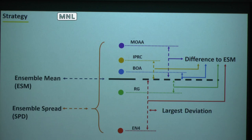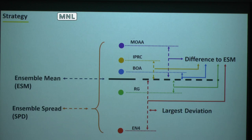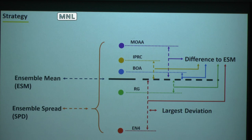For every variable we care about, at any time and anywhere, we can have five values coming from each of the products. From every five of them, we can compute a mean — we call that the ensemble mean — and a standard deviation, which we call the spread. The ensemble mean works as a reference to tell us how different they are, while the ensemble spread tells us, as a group, how large the disagreement is. We also record for each product how different it is from the reference, including the largest deviation, using absolute values. This tells us whether all of them are scattered or if it's just one bad apple.